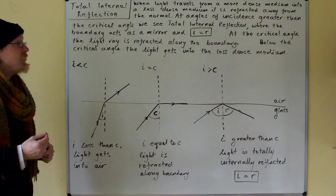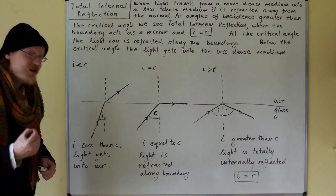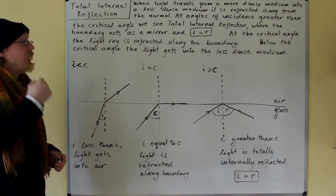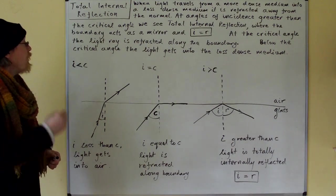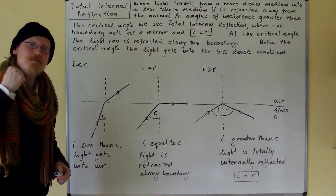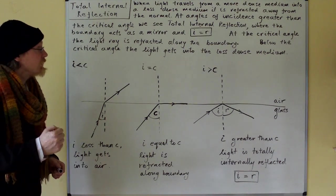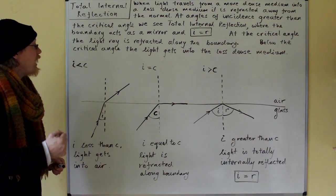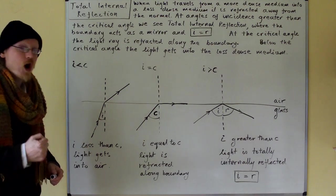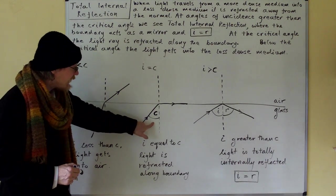At angles of incidence greater than the critical angle we see total internal reflection where the boundary acts as a mirror and I equals R. The law of reflection holds. At the critical angle the light ray is refracted along the boundary. So this is the critical angle here.